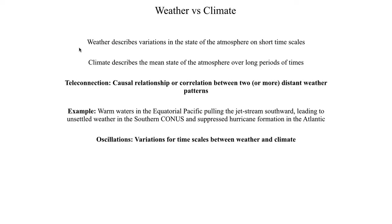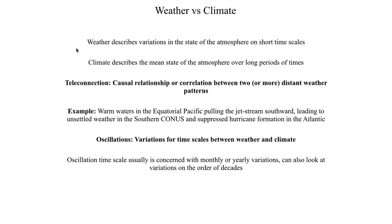The idea of an oscillation refers to some variation in the atmosphere that occurs with timescales between weather and climate. Weather involves timescales on the order of weeks; climate at shortest involves timescales on the order of several decades. Oscillations describe variations that happen in between — on the order of months, years, or at the extreme cases a decade or two. Most oscillations we worry about happen on the order of months or years, though they can range from one or two months to several decades.